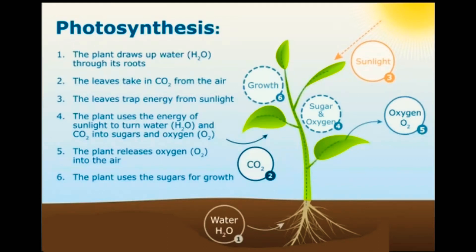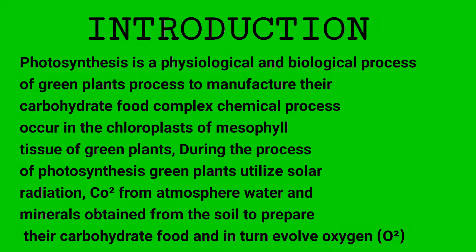Welcome to my channel. Today I introduce the photosynthesis process. Photosynthesis is a physiological and biological process of green plants to manufacture their carbohydrate food — a complex chemical process that occurs in the chloroplasts of mesophyll tissue of green plants. During the process of photosynthesis, green plants utilize solar radiation, carbon dioxide from the atmosphere, water and minerals obtained from the soil to prepare their carbohydrate food.